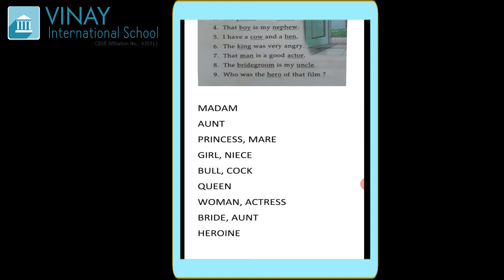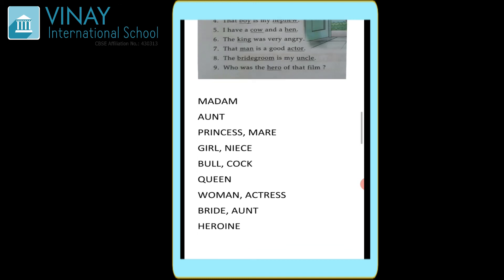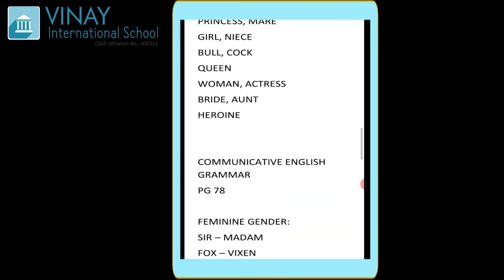Moving on to the eighth question: 'The bridegroom is my uncle' — yaha pe bhi do words underline kiye gaye hai — bridegroom and uncle. Bridegroom ka matlab ho jaega dulha, groom that is dulha. Toh dulha ka feminine form — that is dulhan — that is bride in English, that is a feminine form. Uncle ka ho jaega aunt. Now the last is 'Who was the hero of that film?' — hero ka ho jaega heroine.